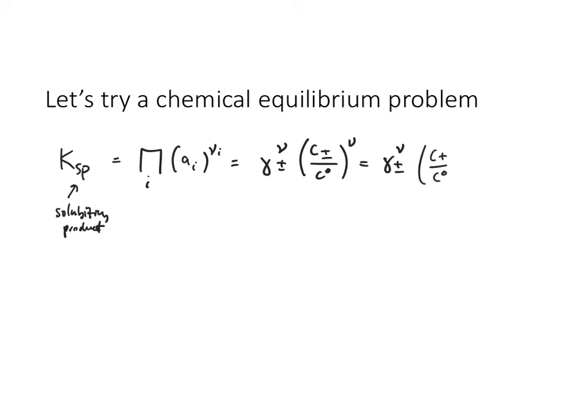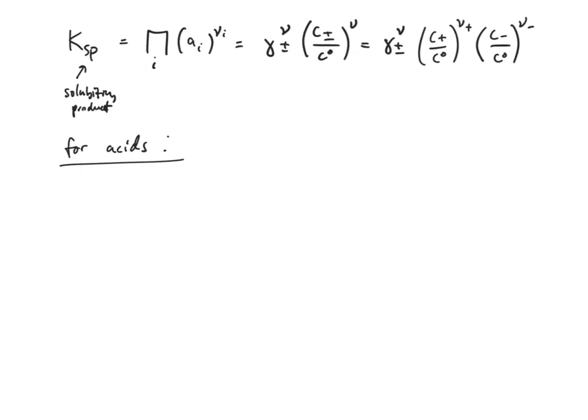...and then nu of the positive ion, c-minus over c-naught, nu of the negative ion. Now for acids, we've got an acid dissociation constant. This is called a dissociation constant.